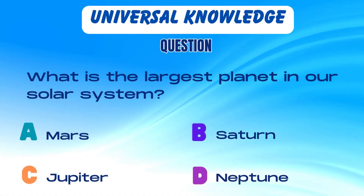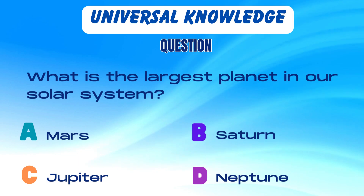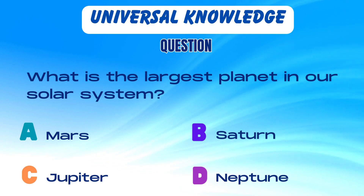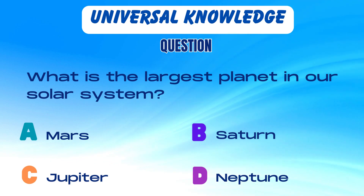What is the largest planet in our solar system? Is it A. Mars, B. Saturn, C. Jupiter, or D. Neptune?